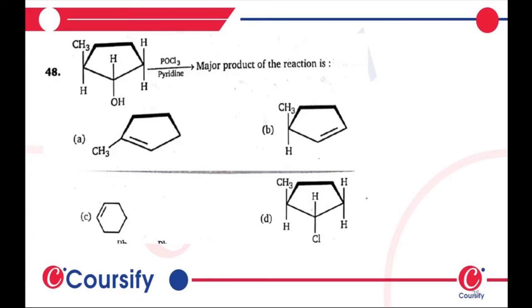In option C there is only one double bond in the ring. In option D we are having the same, but here there is a substitution of Cl.